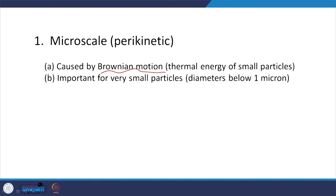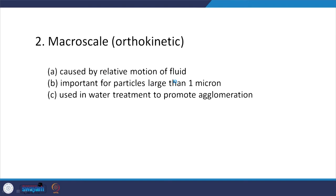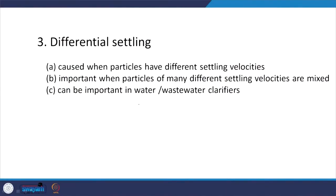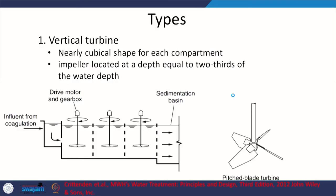Microscale or perikinetic flocculation is driven by Brownian motion diffusion — thermal energy of small particles around 1 micron in size. Macroscale or orthokinetic flocculation is based on fluid flow and is relevant for bigger particles; we use it to promote agglomeration. Differential settling occurs because different particles have different settling velocities, as we saw in sedimentation. When different fluid velocities are imparted to the water, these differential settling velocities also play a role.